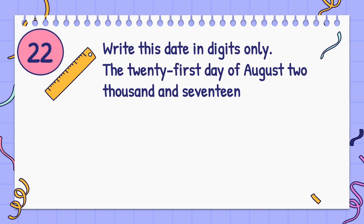Write this date in digits only: the 21st day of August 2017. Answer: 21-08-2017.